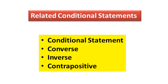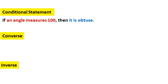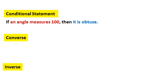Now let's look at some new vocabulary: related conditional statements. We're going to start with the conditional statement and then discuss the converse, the inverse, and the contrapositive. Let's look at the conditional statement: if an angle measures 100°, then it is obtuse. In symbolic notation, we give the hypothesis the letter P and the conclusion the letter Q, so we write it simply as: if P then Q.